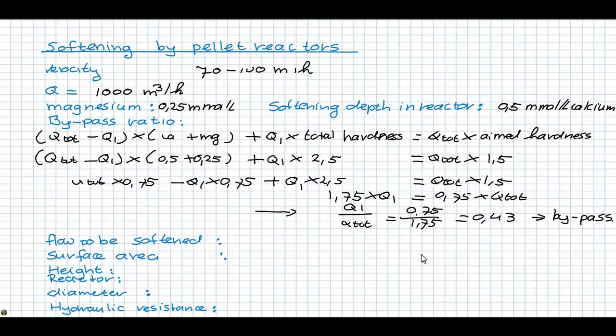So the flow to be softened will then be 3,000 cubic meter an hour times 1 minus the bypass flow, which is 570 cubic meter an hour.